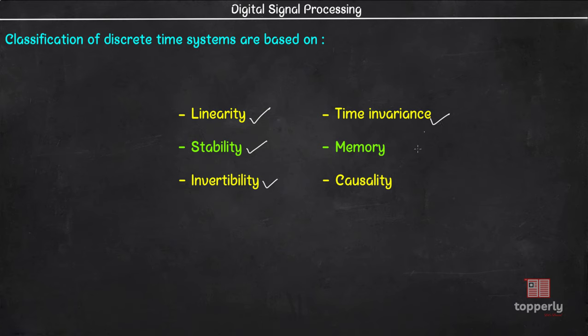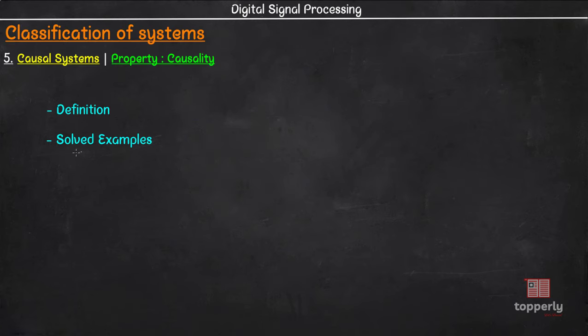In this lecture we will learn another property which is causality. We will study the definition first and then see some solved examples so that you get a better idea on how to check for causality of a system. So let us start our lecture.